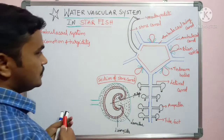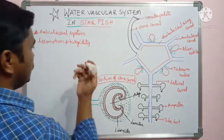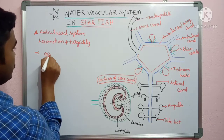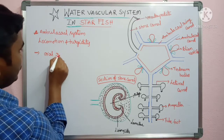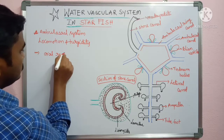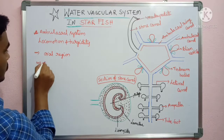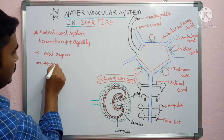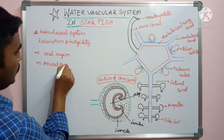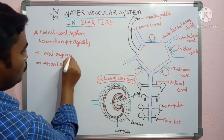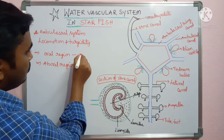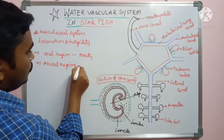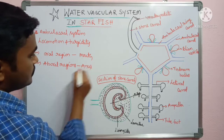If you see the starfish, there are two regions: the oral region and the aboral region. The oral region contains the mouth, and the aboral region contains the anus.